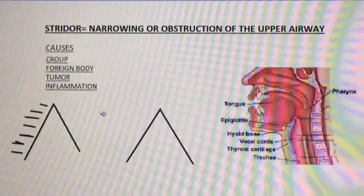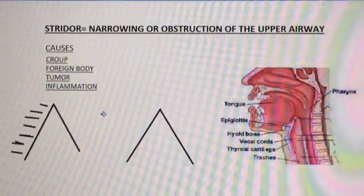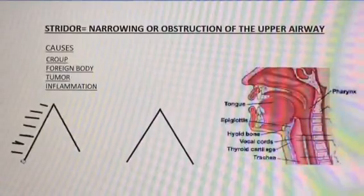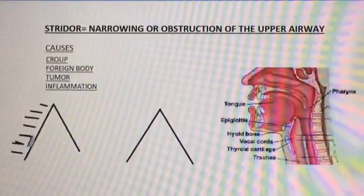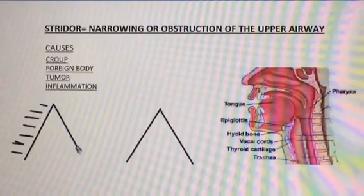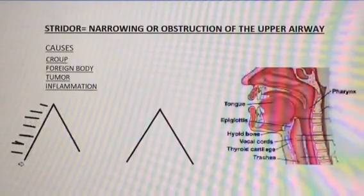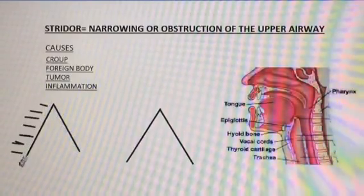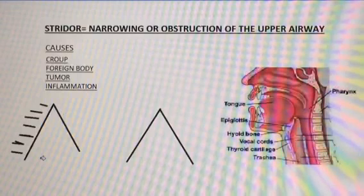Hello, it's Wes, Super Wes that is. In this video I want to discuss stridor. Stridor is caused by narrowing or obstruction of the upper airway. Stridor is wheezing, but it's usually heard during the inspiratory phase — whereas in this diagram this is the inspiratory phase and this is the expiratory phase. These little lines denote wheezes. So during inspiration, stridor can be heard without a stethoscope.